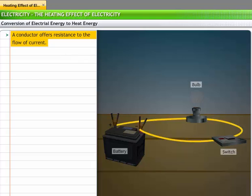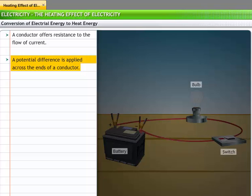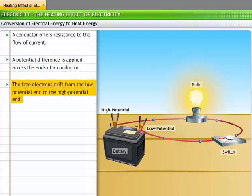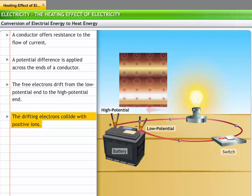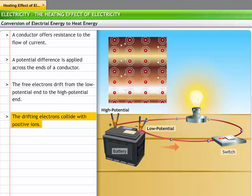Every conductor offers resistance to the flow of current. When a potential difference is applied across the ends of a conductor, the free electrons in the conductor start drifting from the low potential end to the high potential end. These electrons collide with the positive ions, that is, the atoms that have lost their electrons.